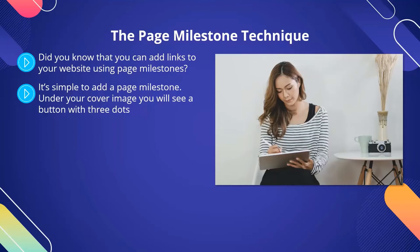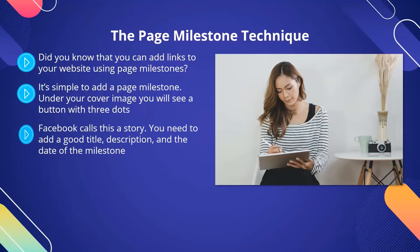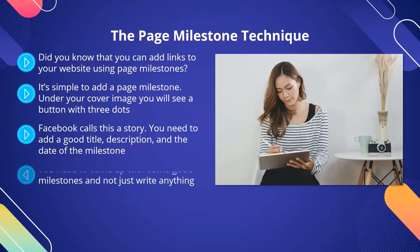Facebook calls this a story. You need to add a good title, description, and the date of the milestone. Always add a relevant image to your milestone as well. You can add a link to an external website here too, using the full URL as you did in the About tab. You need to come up with some good milestones and not just write anything. Your milestones are your story, and they provide a good way for you to connect with your audience. Add milestones that will trigger emotions. People love zero-to-hero stories, so make good use of this. We will cover your backstory in the next video.